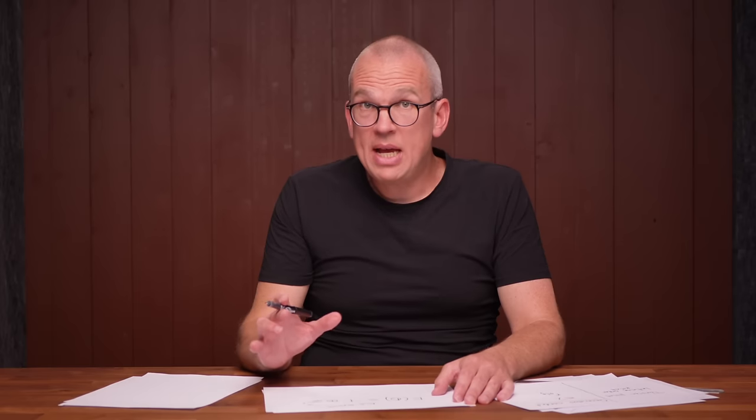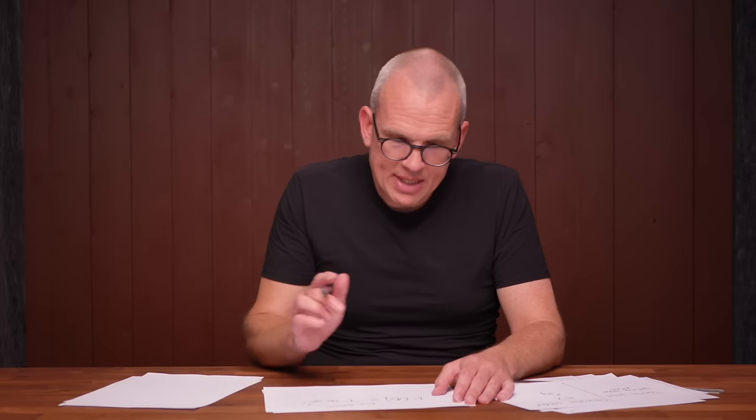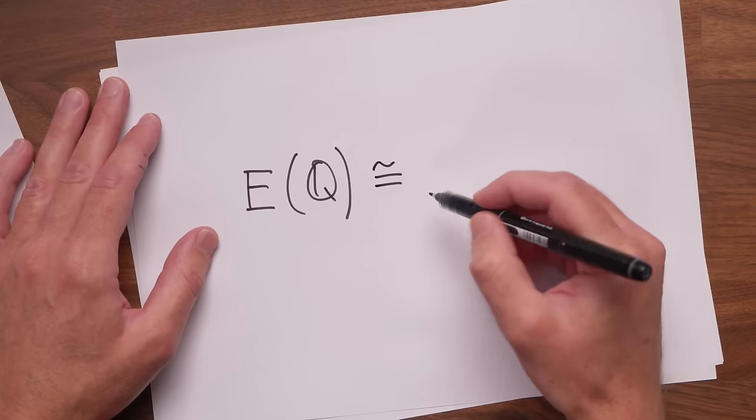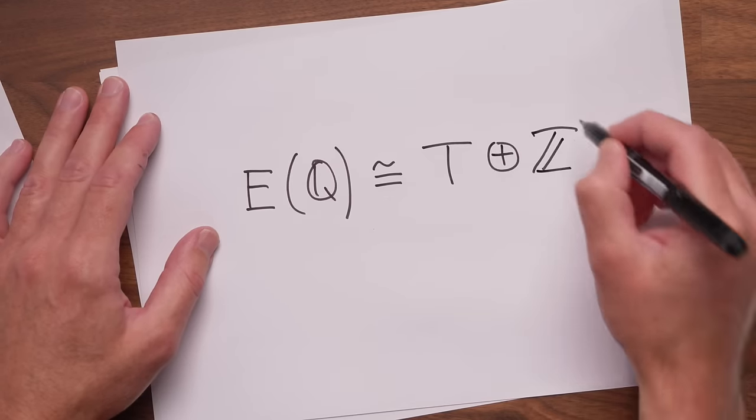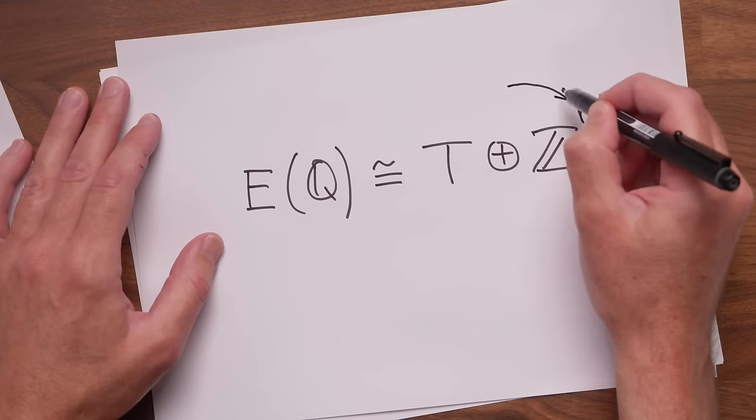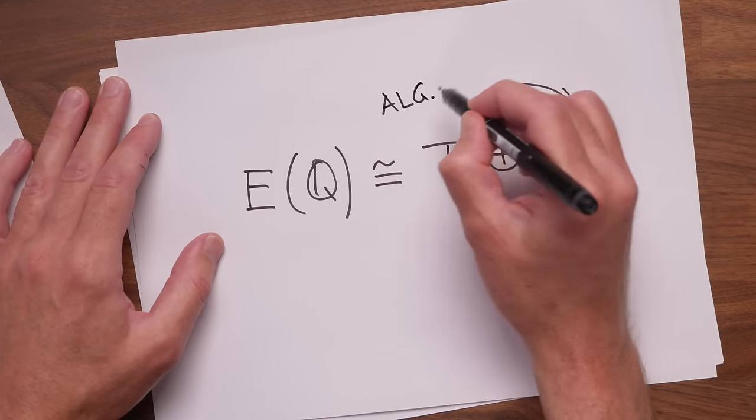In abstract algebra language, the set of rational points is an abelian group, isomorphic to a torsion group plus a free group. And the algebraic rank r is the rank of the free part.